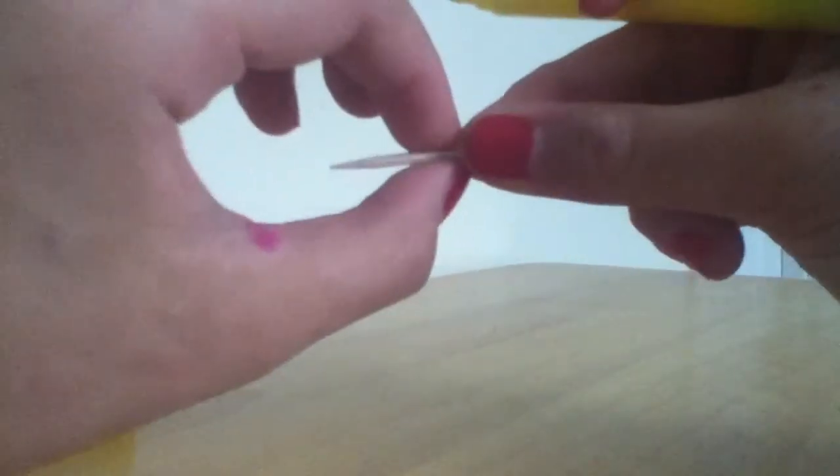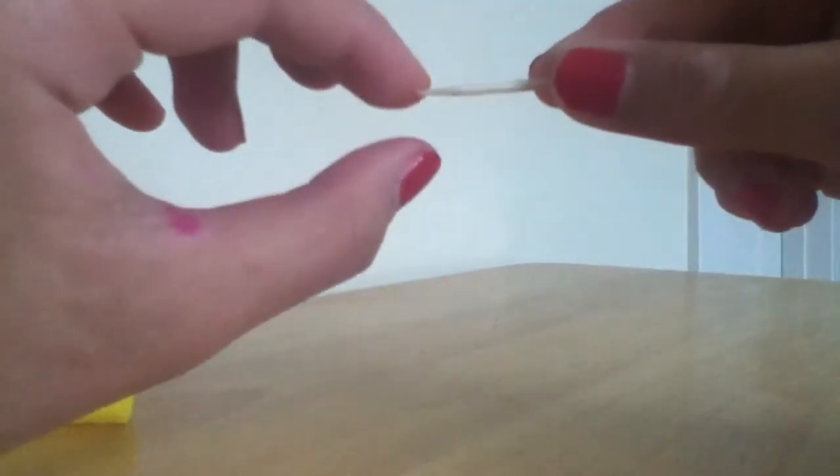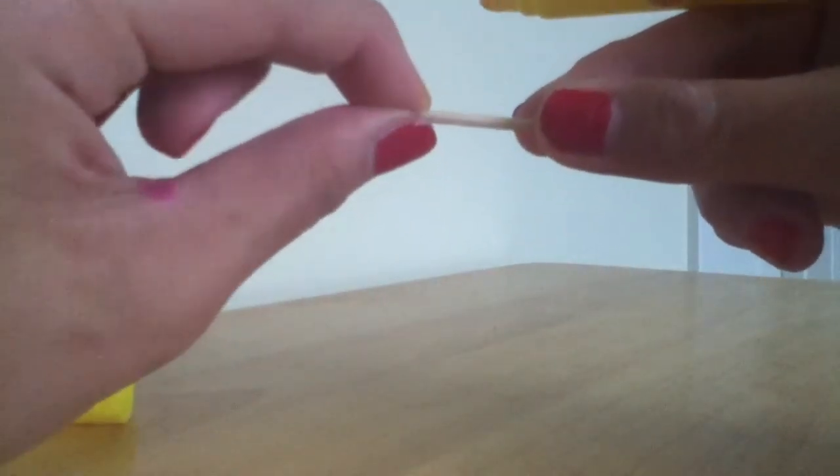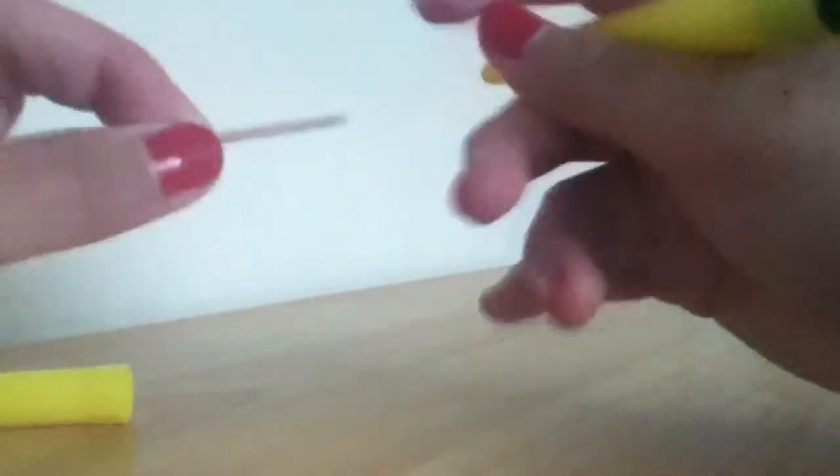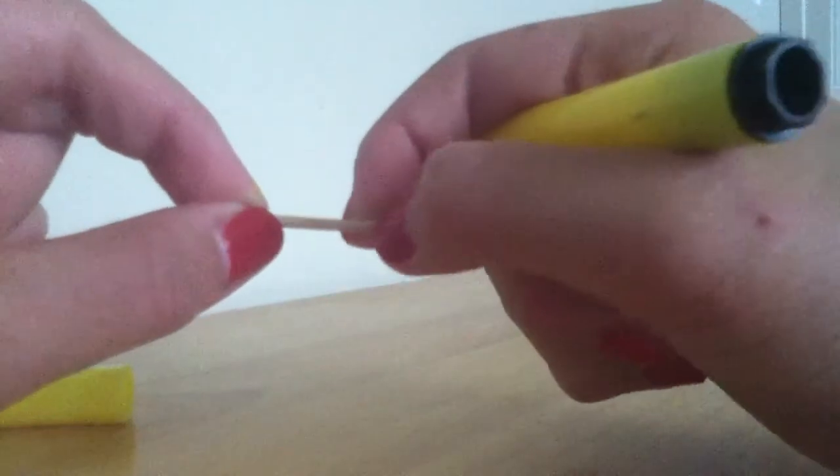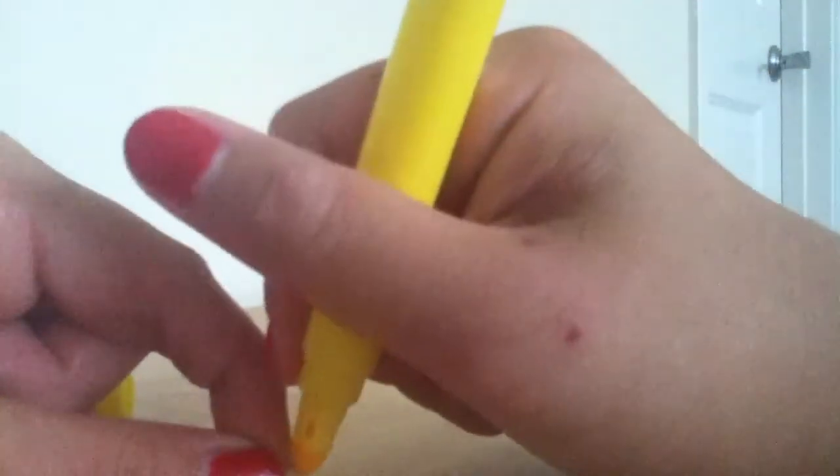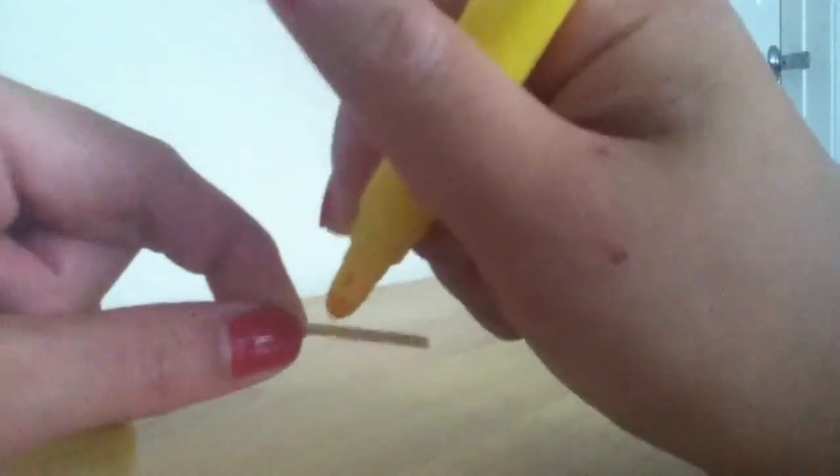Then use your yellow to shade in this part of the pencil. You might also want to hold the sharp end so you don't have to color it. Oh, and I might want to leave some space right here for the eraser. So you just have to color this part.